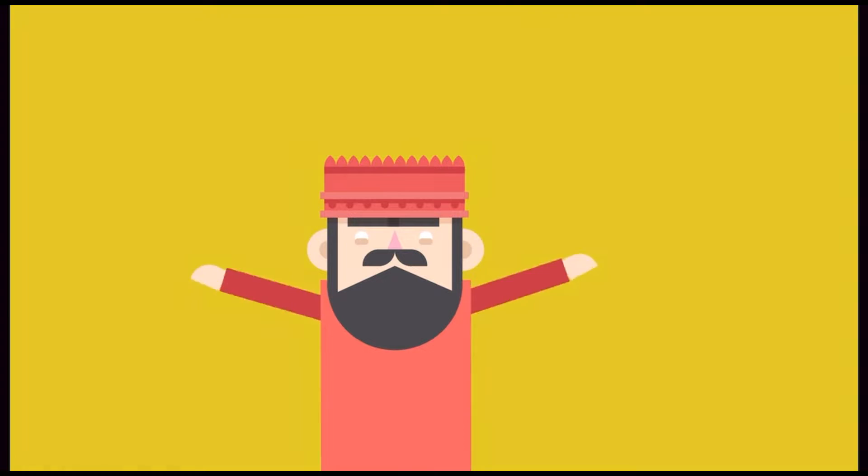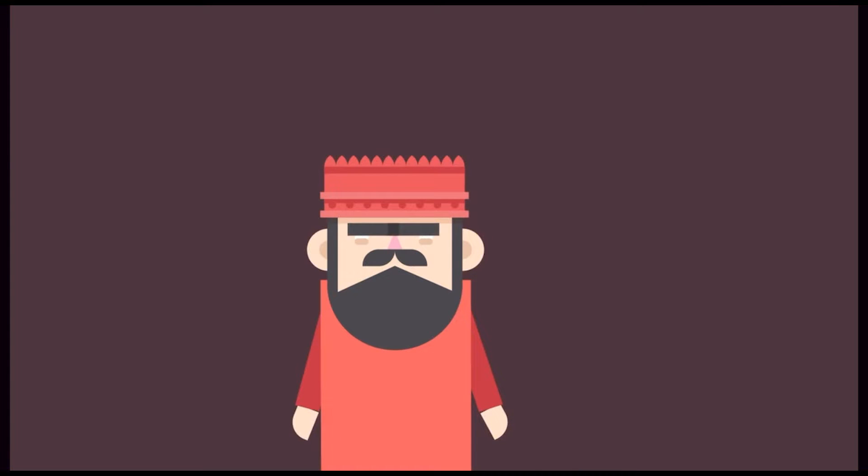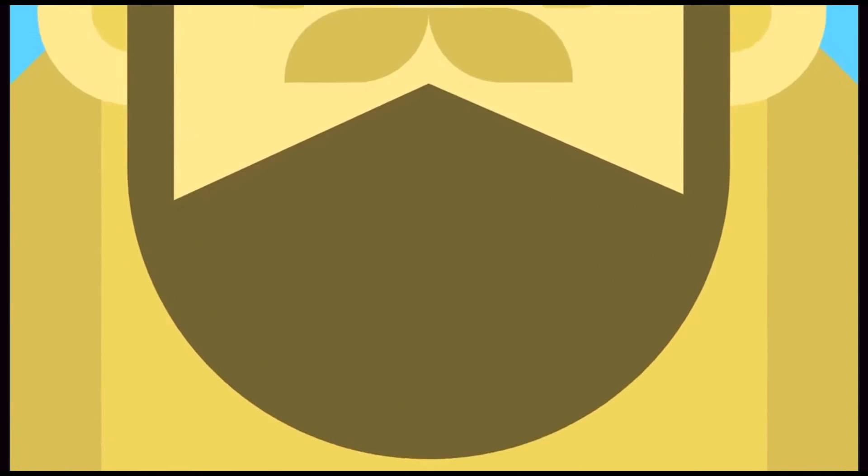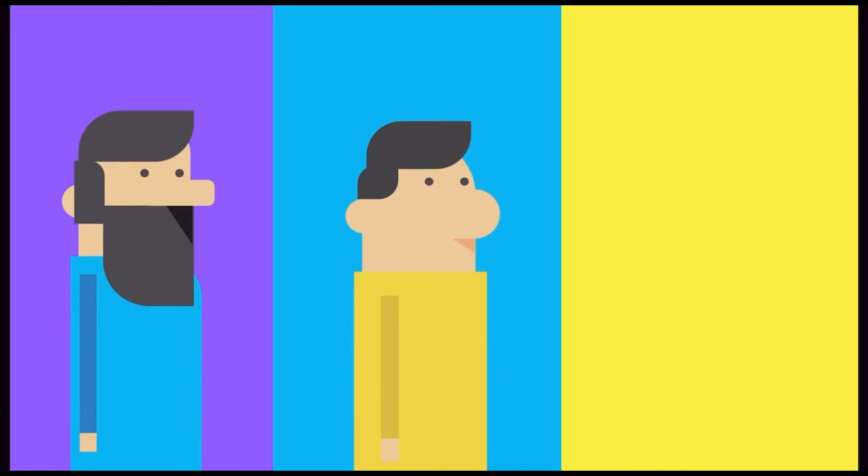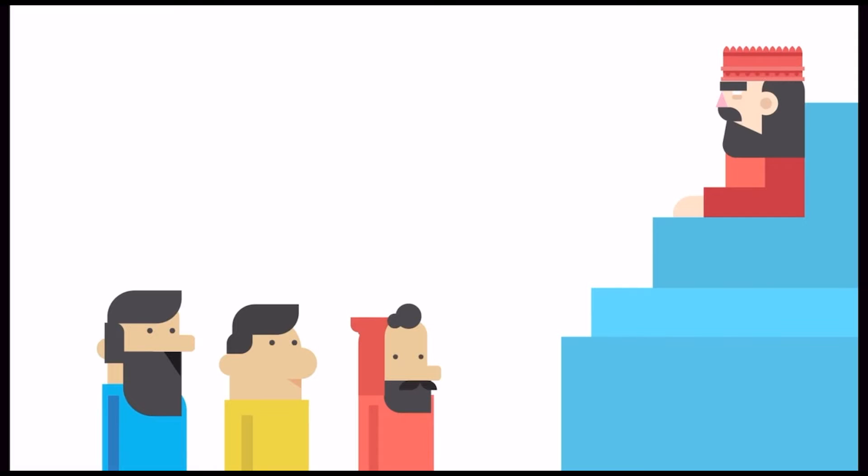But soon, he made it hard for Daniel to follow God again. That's because the king built a huge gold statue of himself, 90 feet tall. Anybody who didn't bow down to it would be thrown into a furnace. This time, Daniel's friends were the ones in trouble. Their names were Shadrach, Meshach, and Abednego. They told the king...